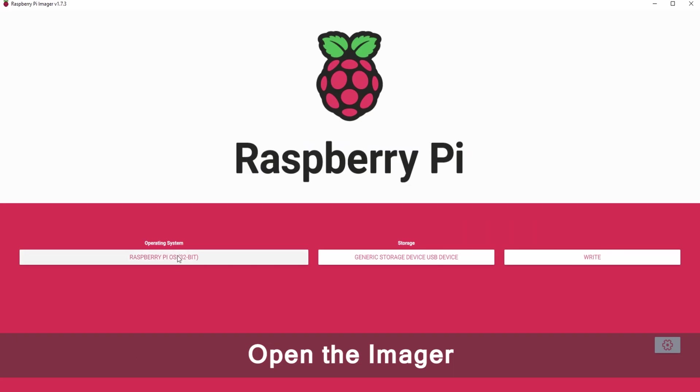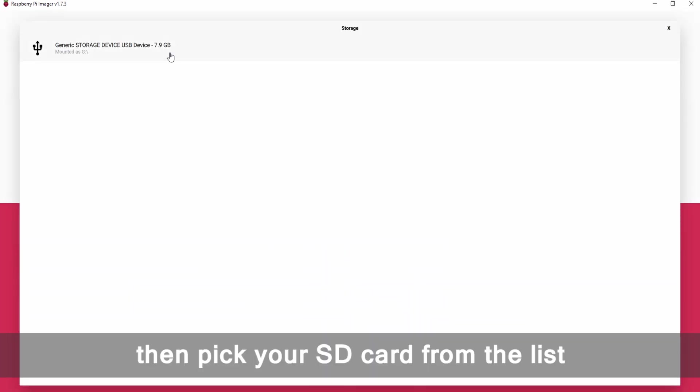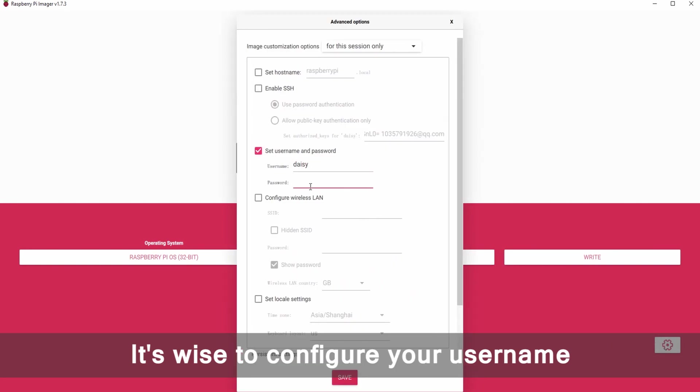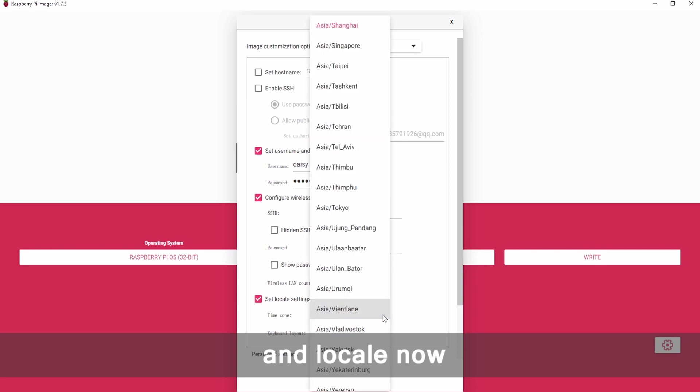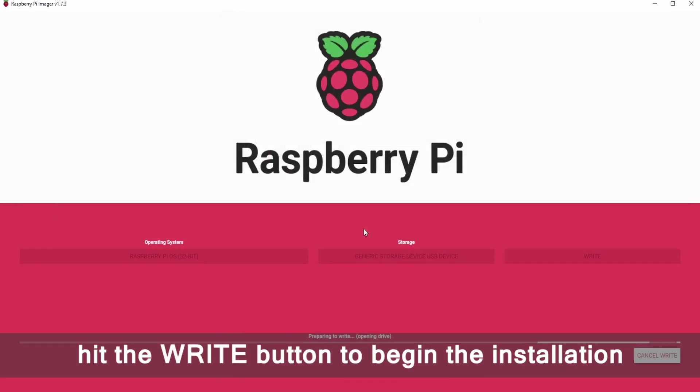Open the imager, select the recommended OS. Then, pick your SD card from the list. It's wise to configure your username, password, Wi-Fi settings, and locale now. Once you've saved your settings, hit the right button to begin the installation.